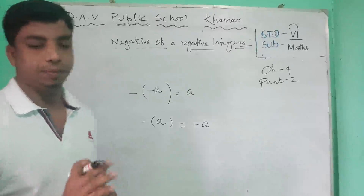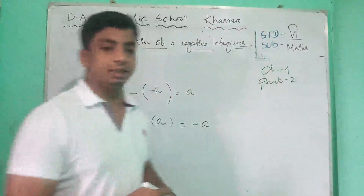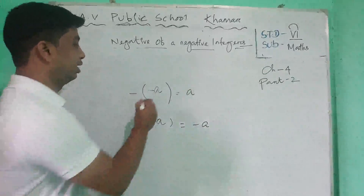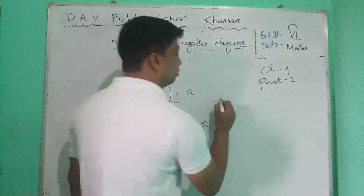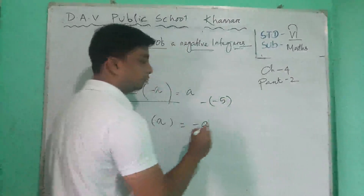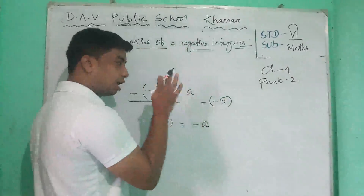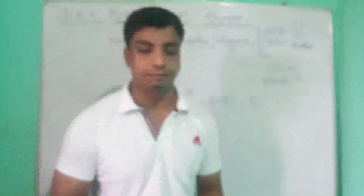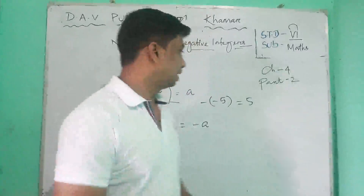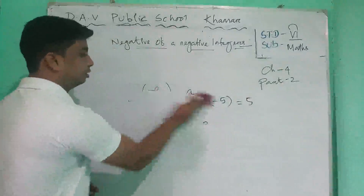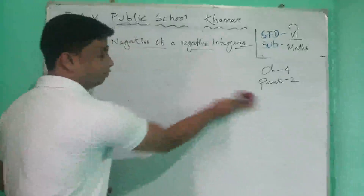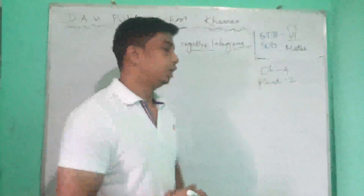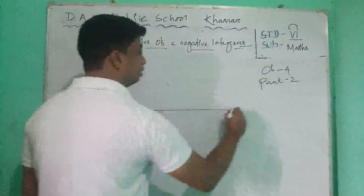Remember that. So these are some facts: negative of a negative integer — for example, minus of minus 5 is 5. Next is ordering. So ordering of integers.